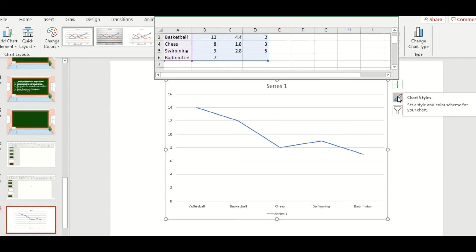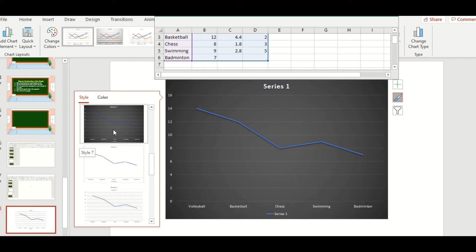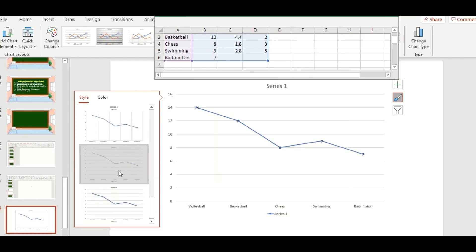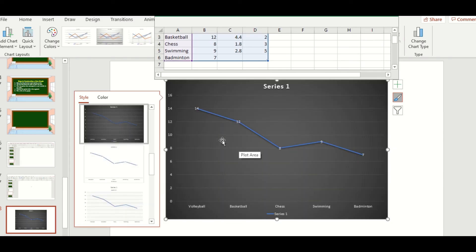We can click this one, chart styles. So we can choose what graph style we want. We can use like this, this one, this one. So it's up to us what style we want to use. OK. For example, we're going to use this chart.